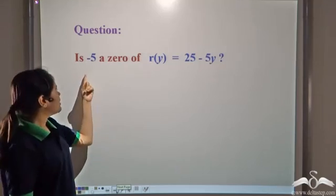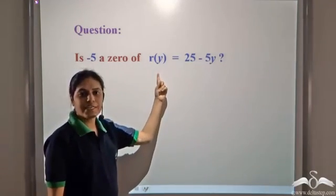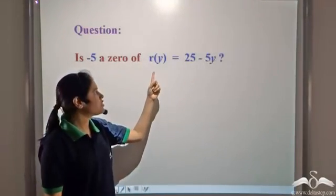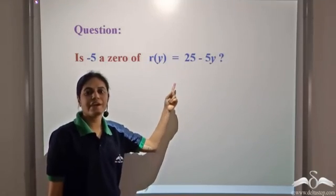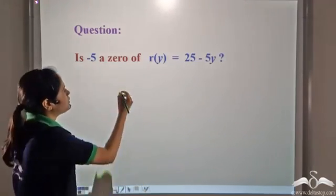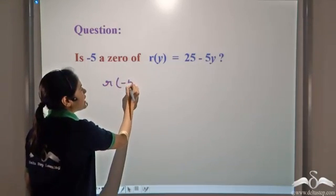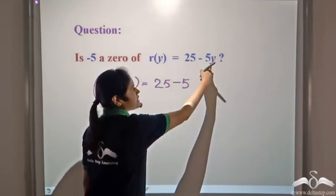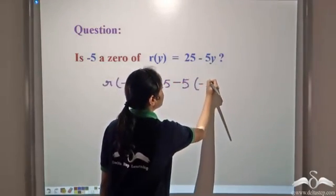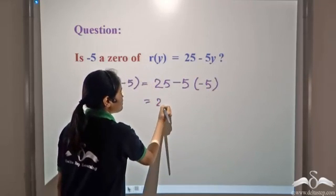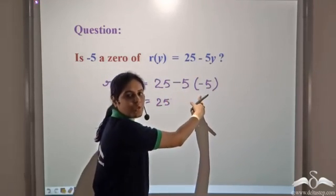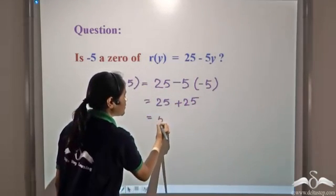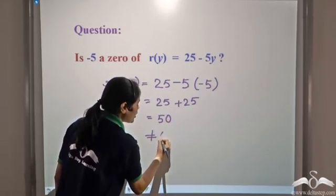Now, is negative 5 a zero of r(y)? To check, we substitute y = -5 and see whether the result is 0. We compute r(-5): substituting negative 5, we get 25 + (-5)(-5) = 25 + 25 = 50. Since 50 is not equal to 0, negative 5 is not a zero of r(y).